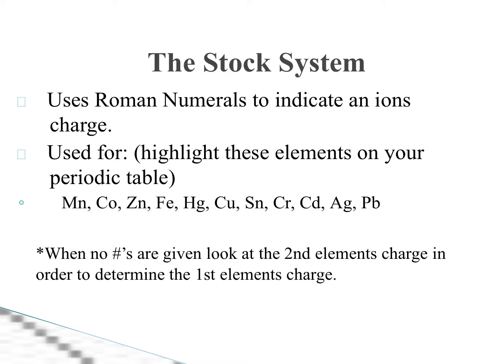Alright, so let's talk about the stock system. We use Roman numerals to indicate ion charge. Now, this is looking at a lot of the elements in that transition metal. So if we look at the periodic table, we never really figured out the charges or the oxidation number for these elements. Well, the stock system is going to help us figure that out. We're going to now be able to make chemical formulas using these. We know our Roman numerals, right? Like one, two, three, four, five.